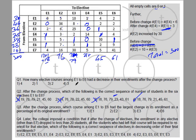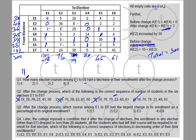Question: how many elective courses from e1 to e6 had a decrease in enrollments? e1 went from 31 to 18 — decrease. e2 went from 46 to 76 — increase. e3 went from 36 to 79 — increase. e4 went from 25 to 21 — decrease. e5 went from 38 to 45 — increase. e6 went from 23 to 61 — increase. So two courses saw a decrease in enrollments — option 3.